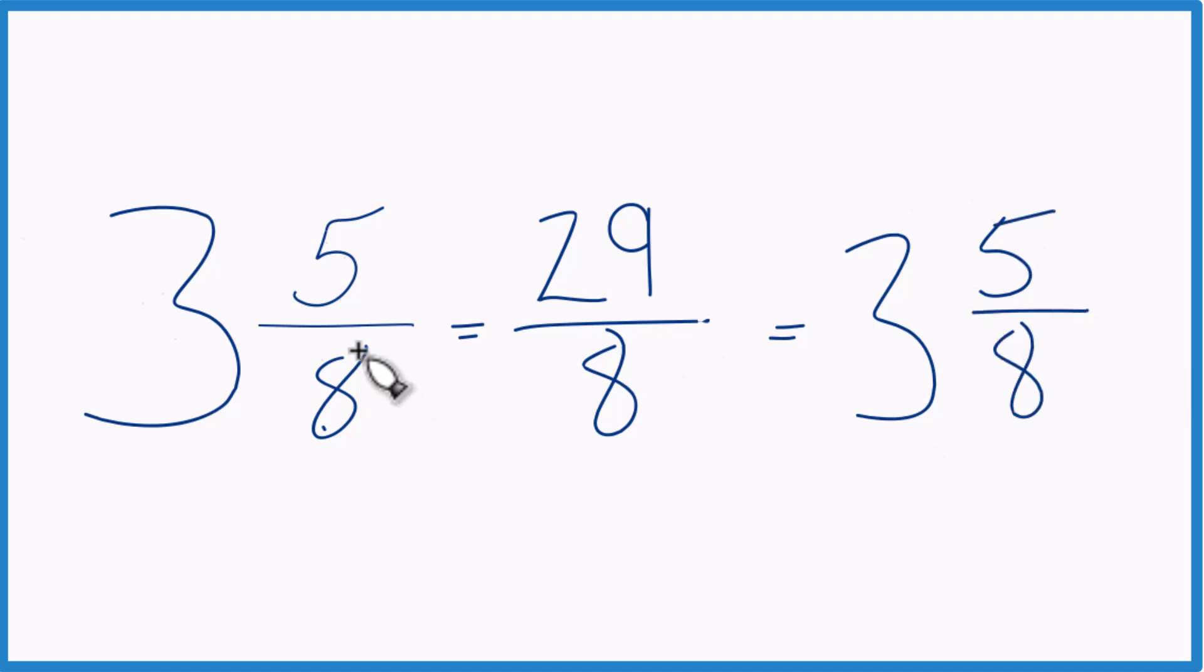So, in answer to our question, 3 and 5 eighths, that mixed number, that equals the improper fraction, 29 eighths.